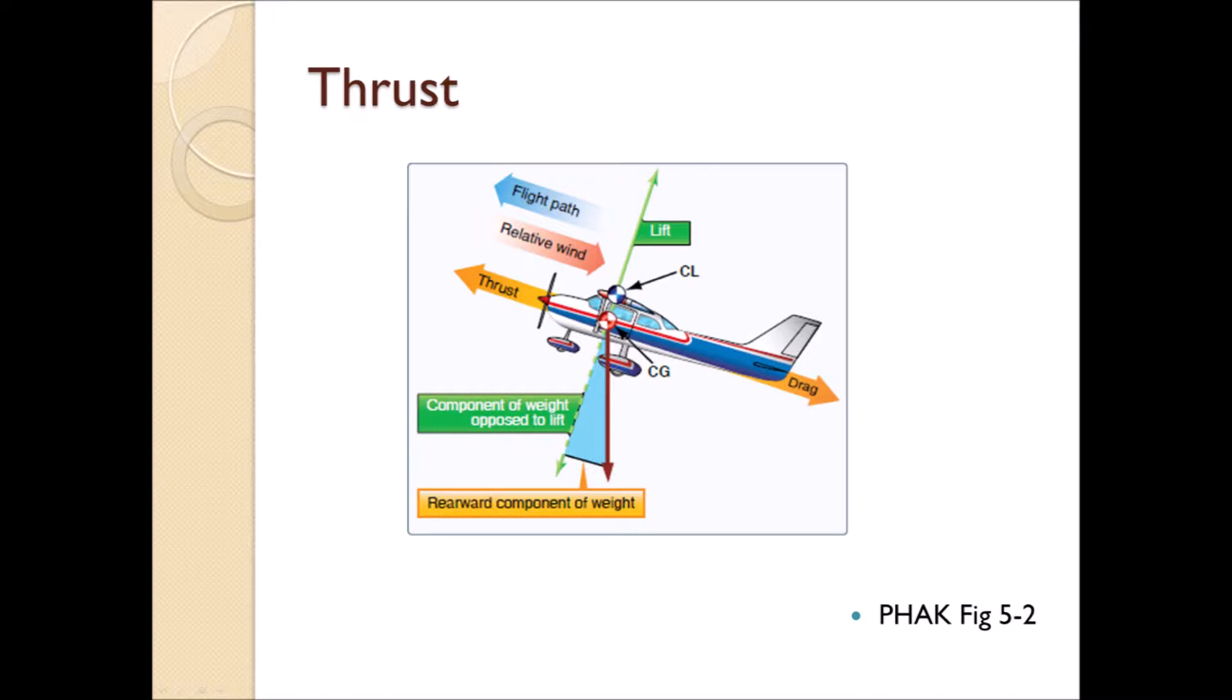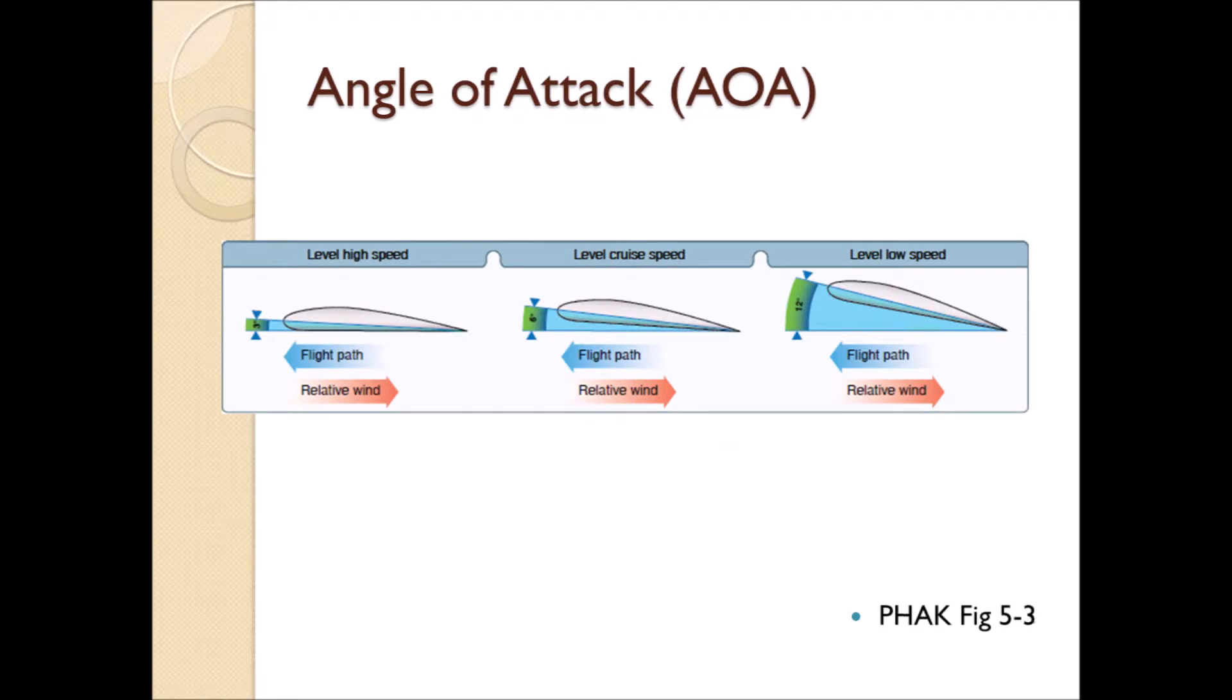As we mentioned before, the angle between the chord of an airfoil and its relative wind is known as angle of attack. Straight and level flight may be sustained at a wide range of speeds by changing the angle of attack. When the airspeed is low, the angle of attack must be relatively high if the balance between lift and weight is to be maintained. But this angle of attack cannot be increased indefinitely.